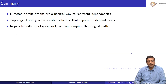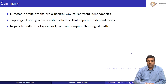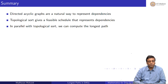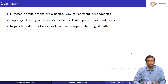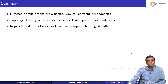To reiterate: directed acyclic graphs are a natural way to represent dependencies. Topological sort gives a feasible schedule — a sequence in which tasks can be done such that all dependencies are satisfied. We also saw the problem of computing the shortest duration needed when tasks can be done in parallel, which is the longest path problem. The longest path can be computed in an overlapping way with topological sort, since once all dependent vertices of a vertex are processed, we have enough information to finalize that vertex's longest path.